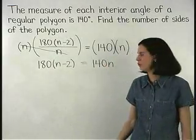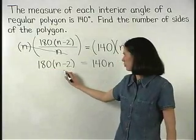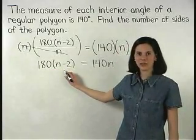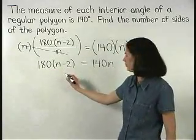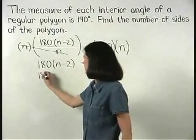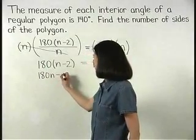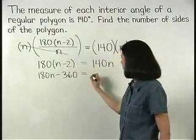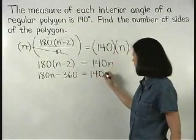Next, we distribute the 180 through the parentheses on the left side, and we have 180 n minus 360 equals 140 n.